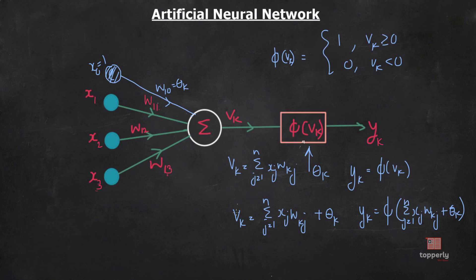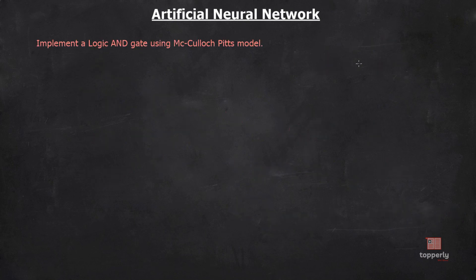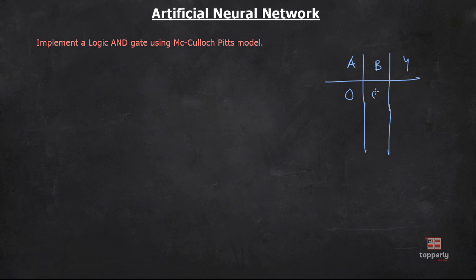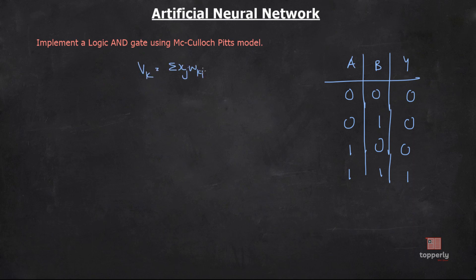Now we will try to implement the logic AND gate. First we need to draw the truth table for the AND gate: a, b, y — 0,0,0; 0,1,0; 1,0,0; 1,1,1. We know that vk equal to sigma of xj times wkj plus theta k. In this particular case we have only two inputs, so n equals 2. This becomes x1 times w11 plus x2 times w12 plus theta 1.